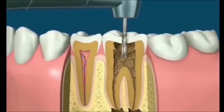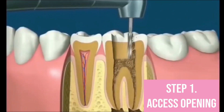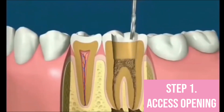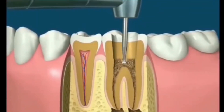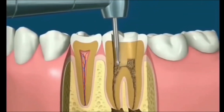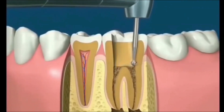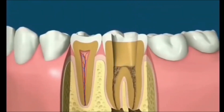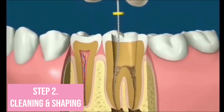Root canal treatment begins with the standard drill to access the inside of the tooth. Slower speed round drills can then be used to remove decay and to expose the canals. Tiny files are then used to remove the contents of these canals.